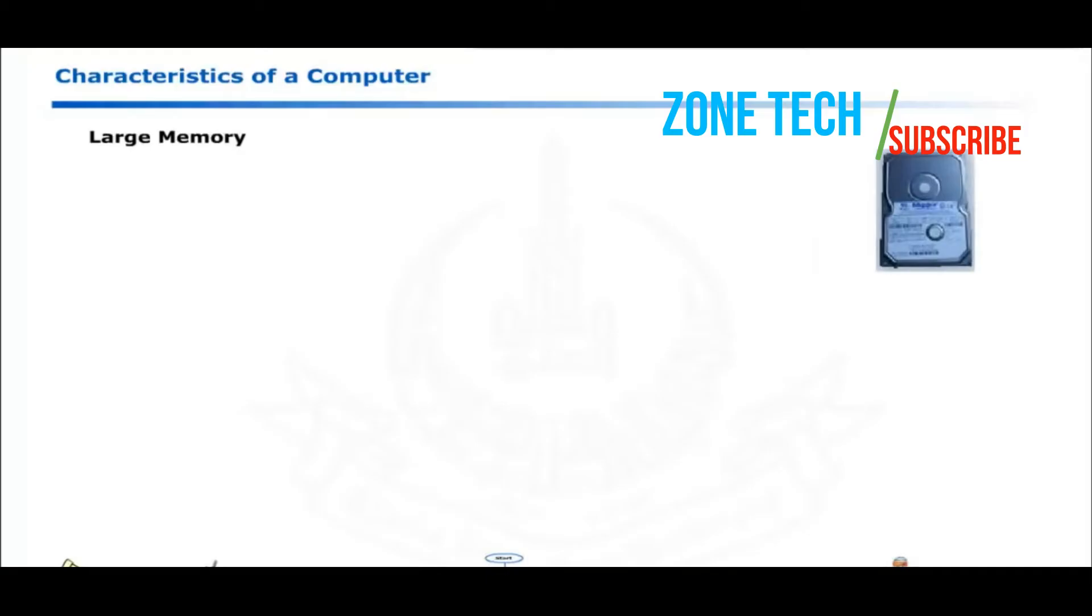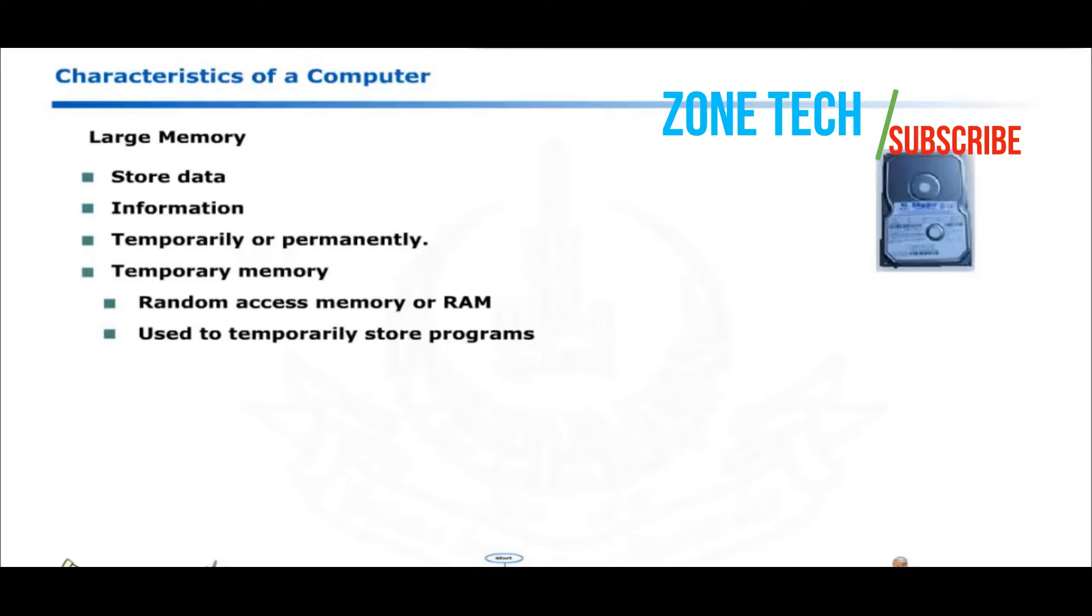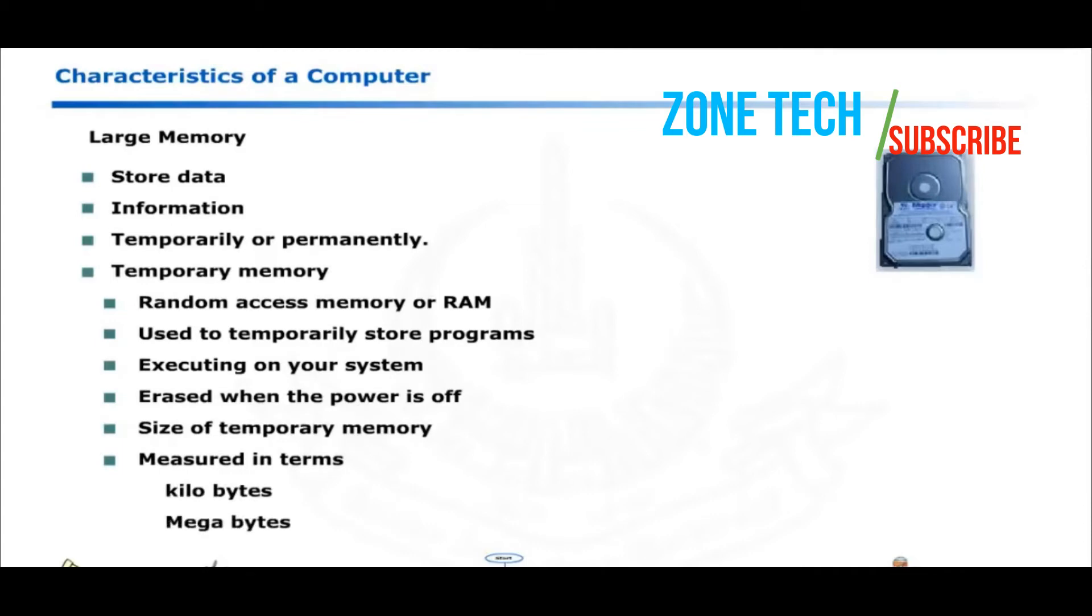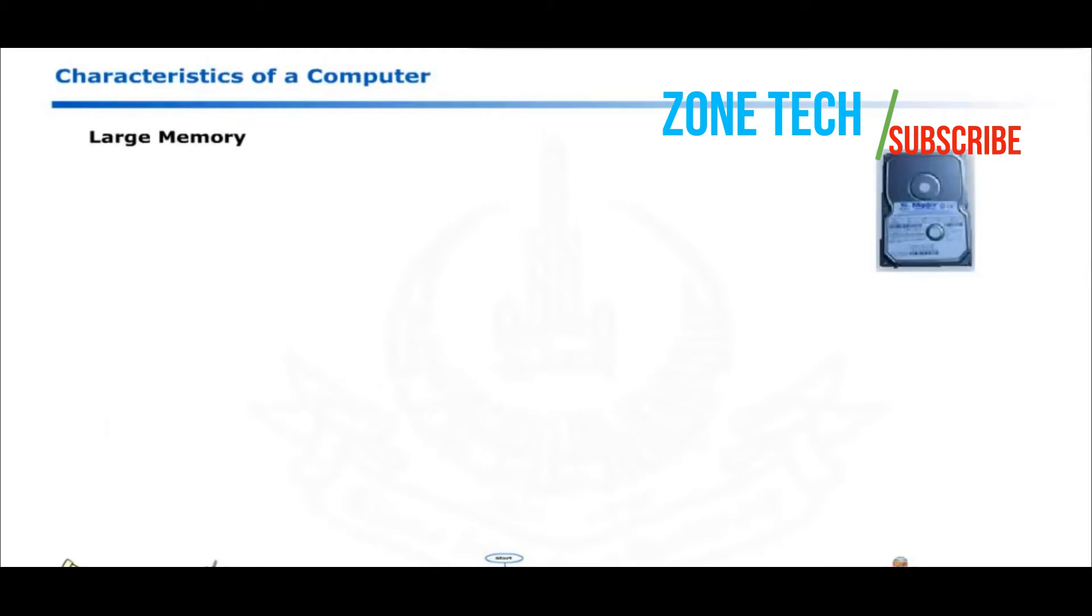Computer memory is used to store data and information temporarily or permanently. Temporary memory is normally referred to as random access memory. This is used to temporarily store programs that are currently executing on your system. The contents of RAM are erased when the power is off. Normally, the size of temporary memory is measured in terms of kilobytes and megabytes. Most modern computers and special graphics computers have large memories in multiples of gigabytes.